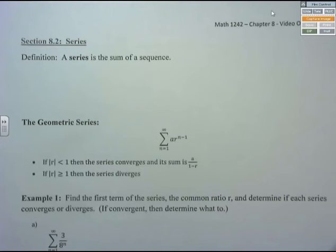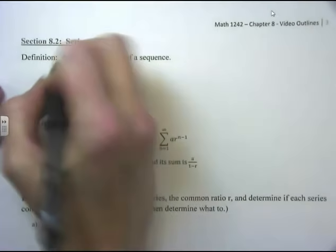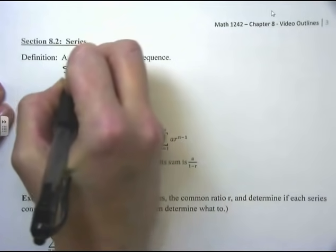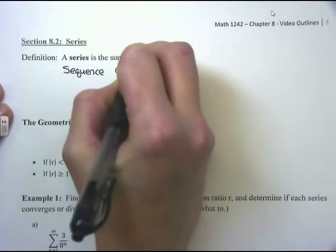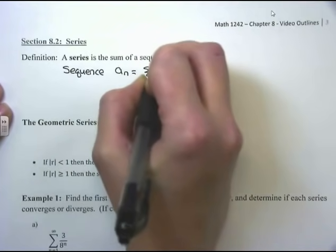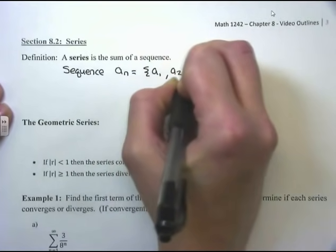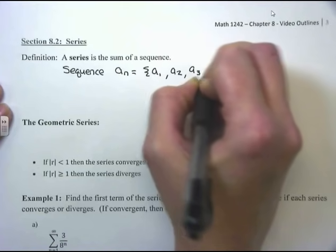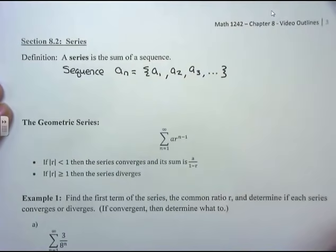Section 8.2 is called Series, and we will actually spend the rest of chapter 8 talking about series, but this is our introduction to them. A series is the sum of a sequence. If I have a sequence a_n, so it has the terms a1, the first term, a2, the second term, and so forth — this is what we worked with in the last section.